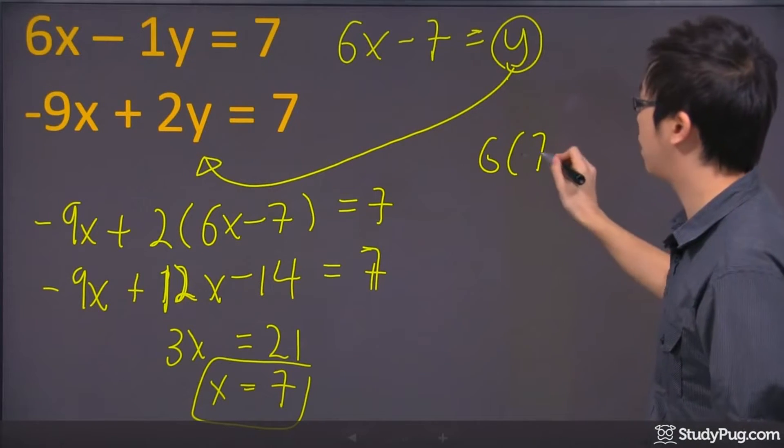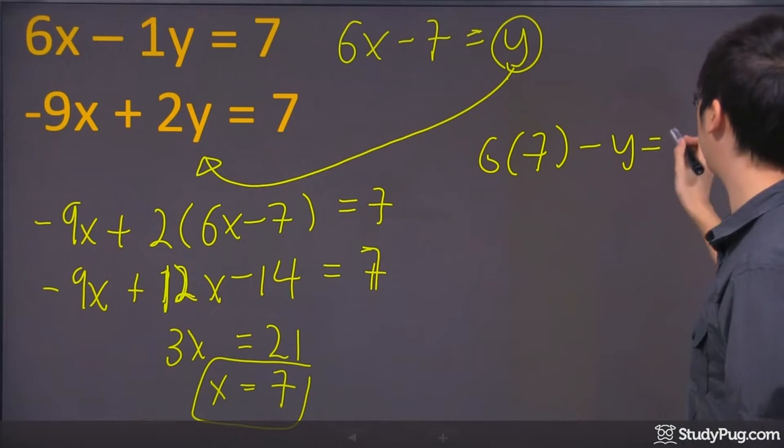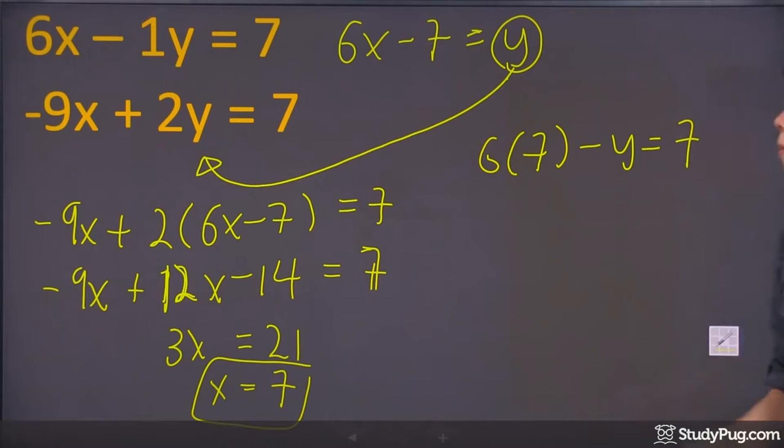It will be 6 times 7 minus y equals to 7. What's 6 times 7? 6 times 7 is 42. So you get yourself 42 minus y equals to 7. Yes, I'm using calculator for all these because I'm nervous when I'm in front of the camera.